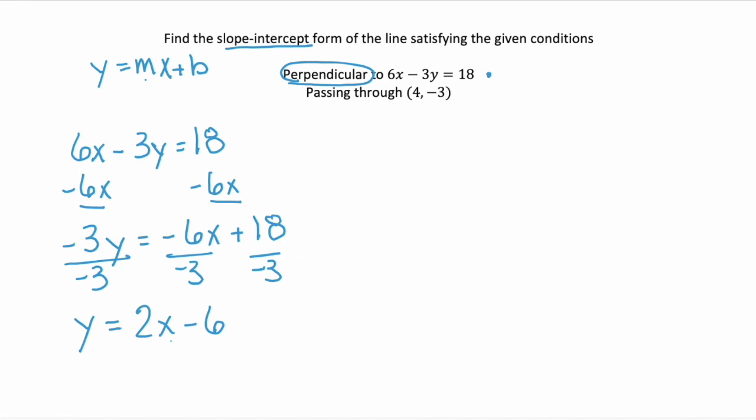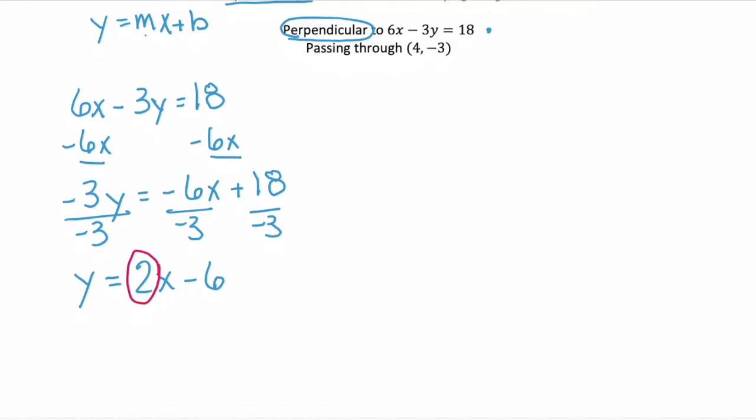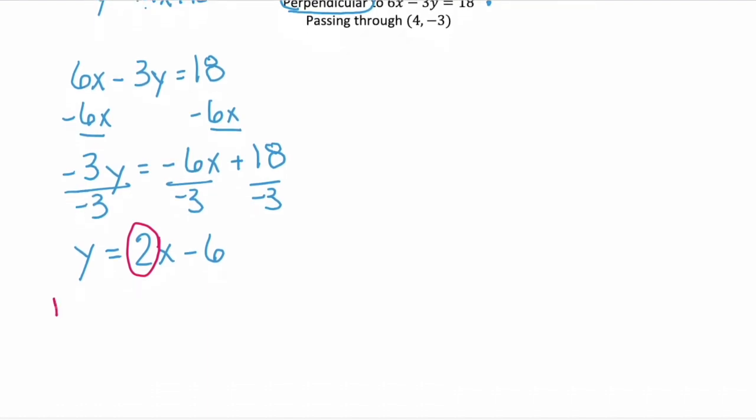So this is the given line, and we want to find something perpendicular to this. So we need to know the slope. Well, 2 is the slope. The slope of our given line is 2, remember that's the same as 2 over 1. So then a perpendicular slope is going to be negative the inverse. So you flip that slope, or negative 1 half.